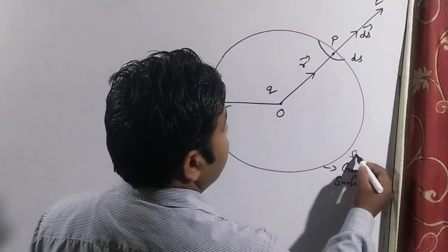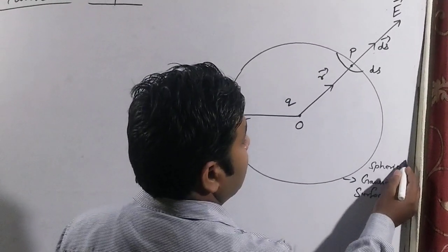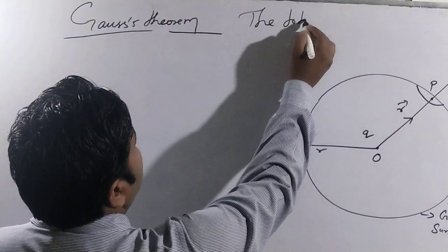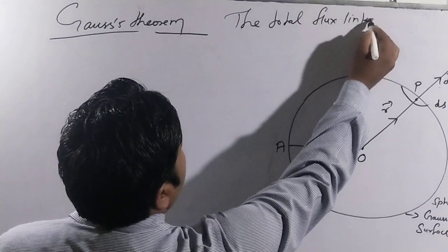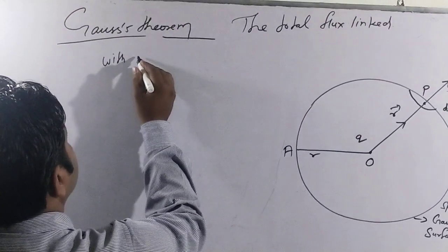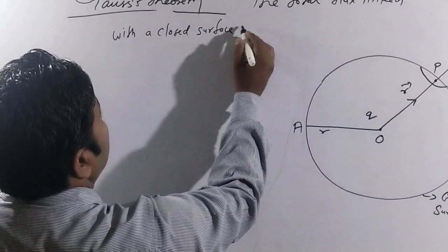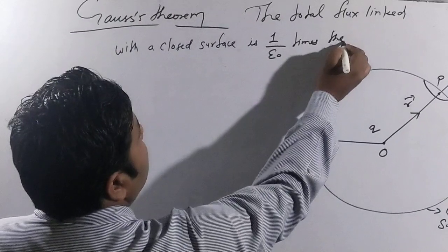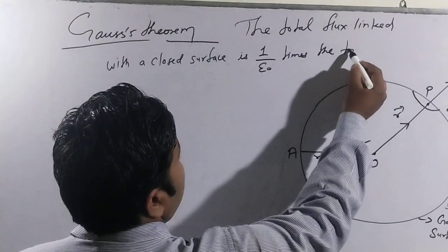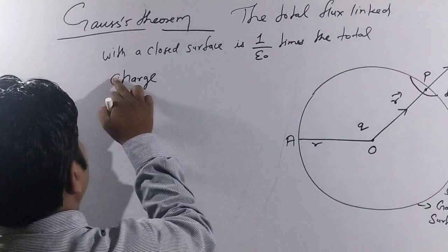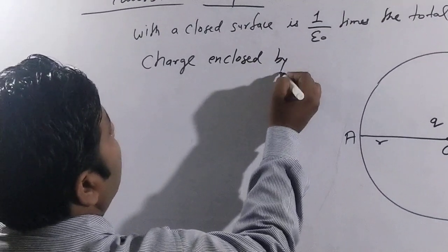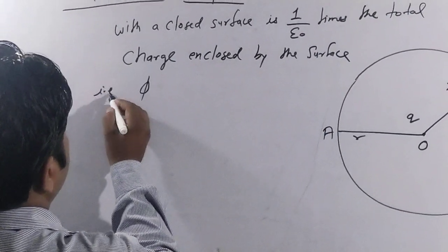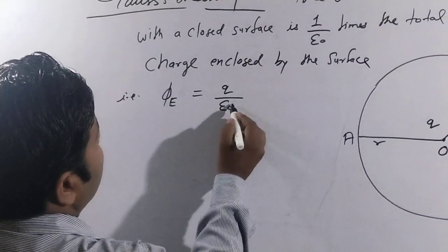The Gaussian surface here is spherical. In the same concept of Gauss's theorem, the total flux linked with a closed surface is equal to q upon ε₀. That means φₑ = q/ε₀. We have to prove this concept using the diagram.